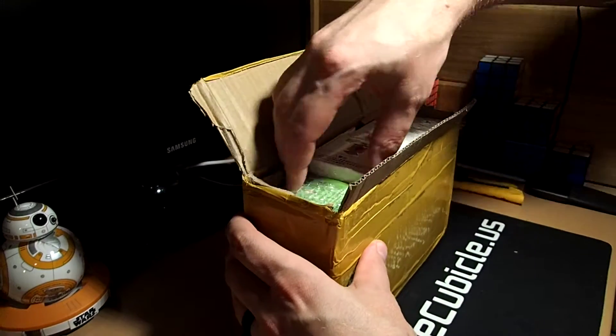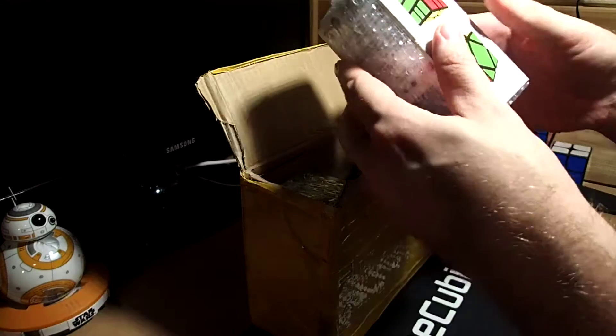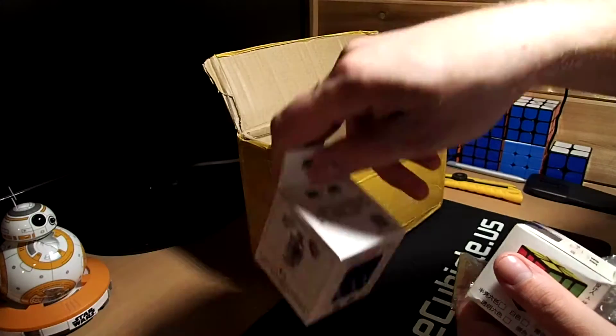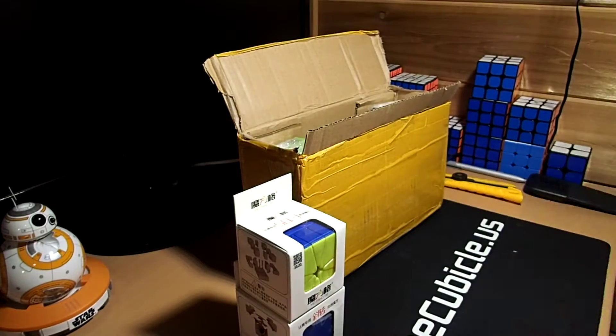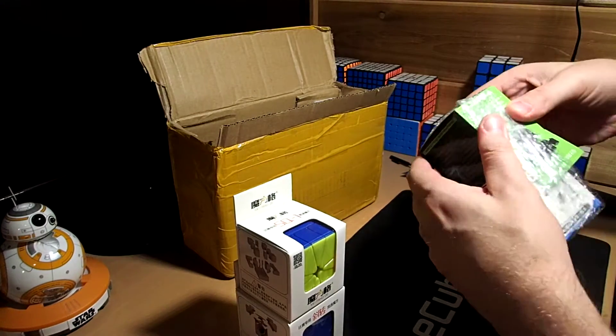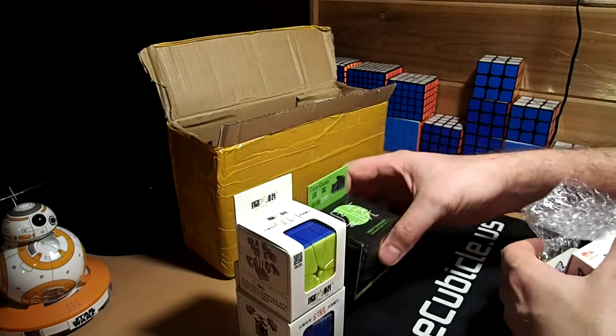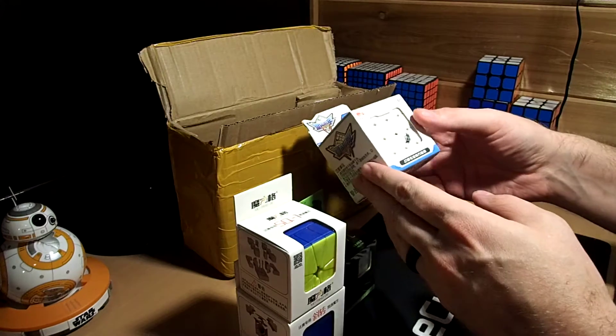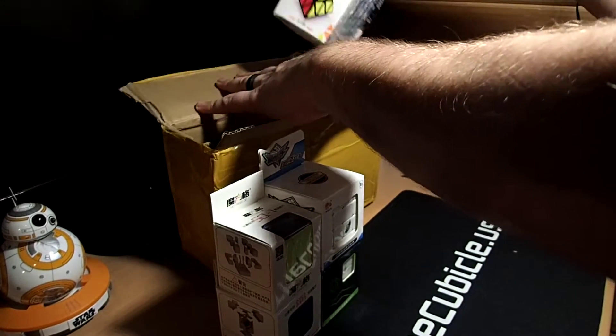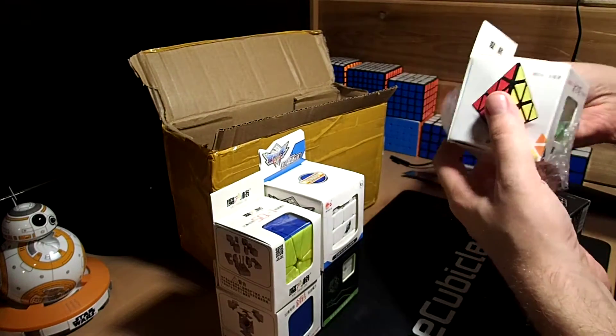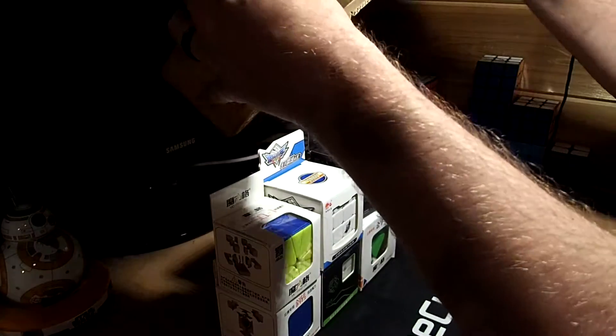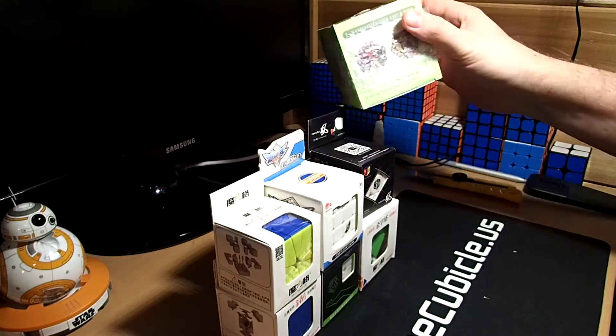Alright, so what have we here? We have the square one and the skewb. I think these are both the Qiyi versions. We have a Guoguan Yuxiao stickerless. This should be the Cyclone Boy's G4, which I've heard great things about and I am anxious to test. Here we have the Yuxian Pyraminx. This would be the X-Men Tornado. And lastly, Diane stickerless Megaminx with ridges.